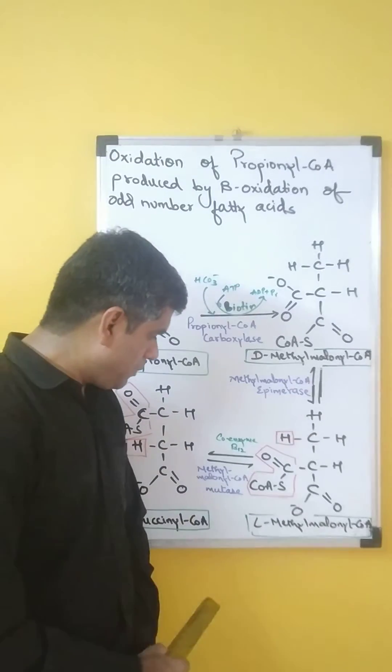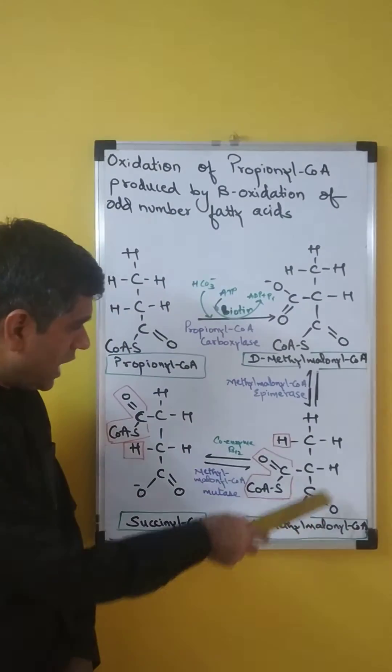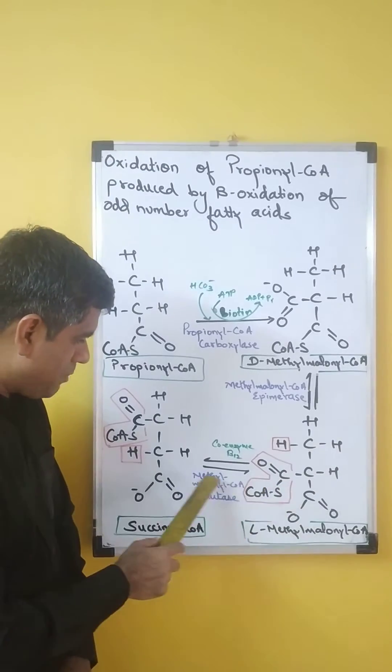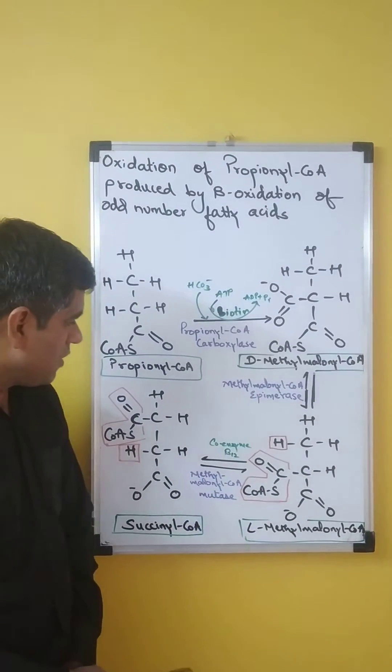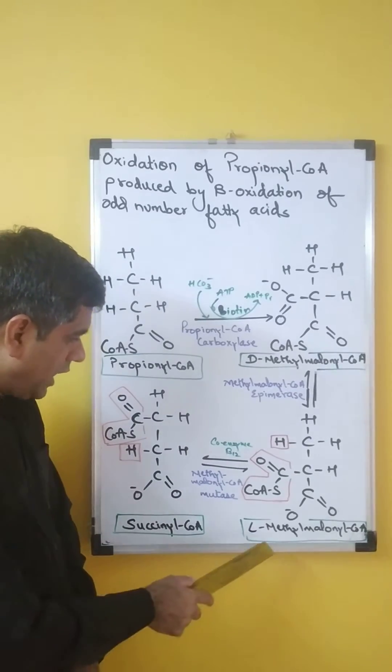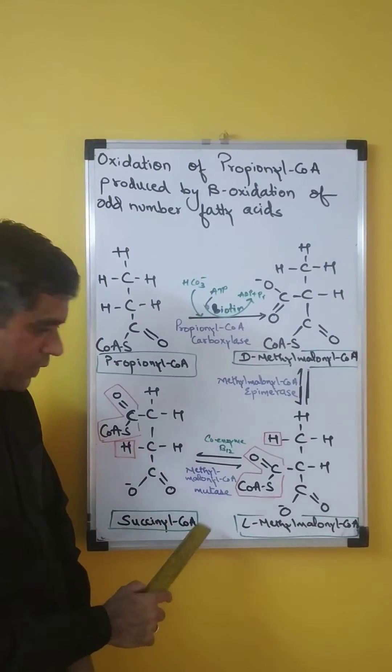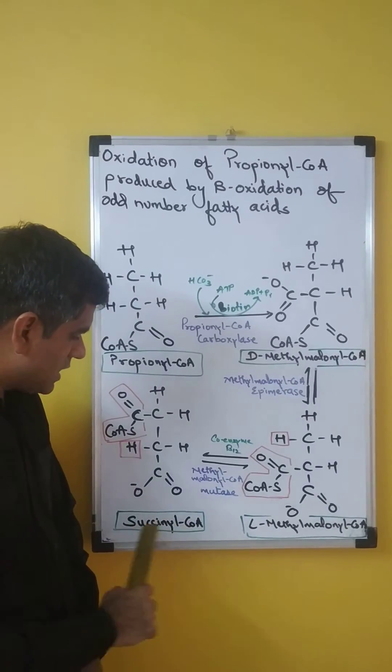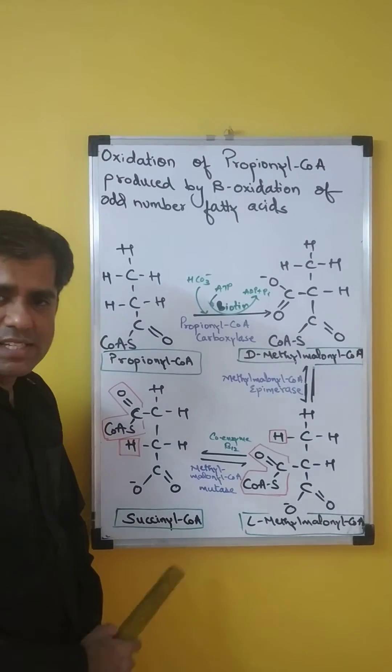In the last step, this L-methylmalonyl-CoA undergoes an intermolecular rearrangement by methylmalonyl-CoA mutase, which requires coenzyme B12 as its cofactor, converting L-methylmalonyl-CoA into succinyl-CoA. We know that succinyl-CoA is an intermediate of the citric acid cycle.